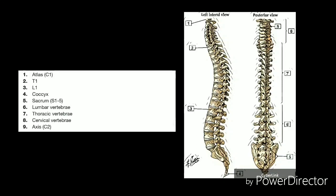When viewed from the side, an adult spine has a natural S-shaped curve. The neck (cervical) and low back (lumbar) regions have a slight concave curve, and the thoracic and sacral regions have a gentle convex curve. The curves work like a coiled spring to absorb shock, maintain balance, and allow range of motion throughout the spinal column. The abdominal and back muscles maintain the spine's natural curves. Good posture involves training your body to stand, walk, sit, and lie so that the least amount of strain is placed on the spine during movement or weight-bearing activities. Excess body weight, weak muscles, and other forces can pull at the spine's alignment. An abnormal curve of the lumbar spine is lordosis, also called sway back.